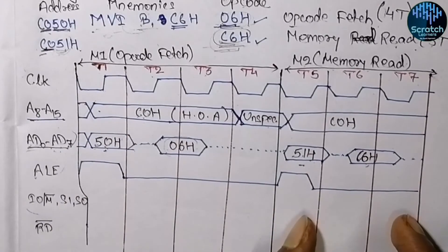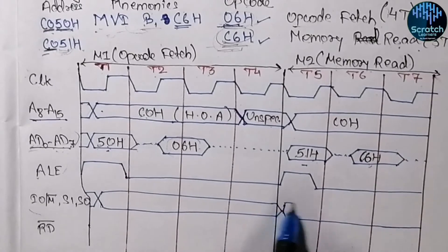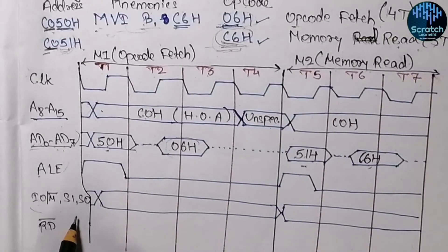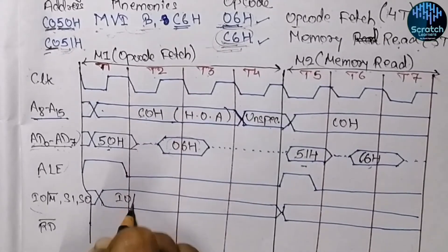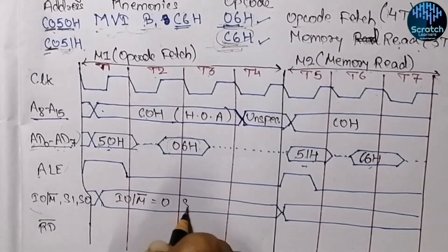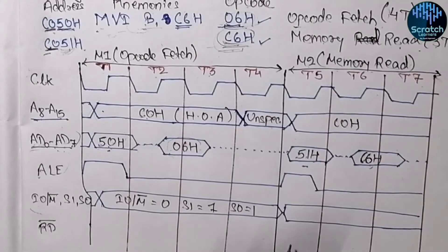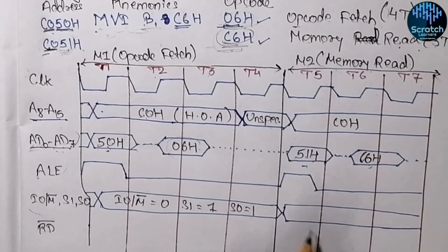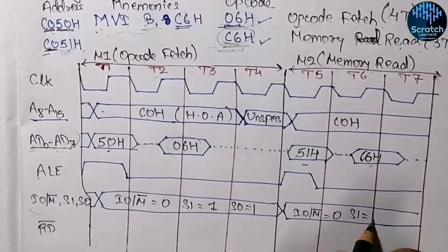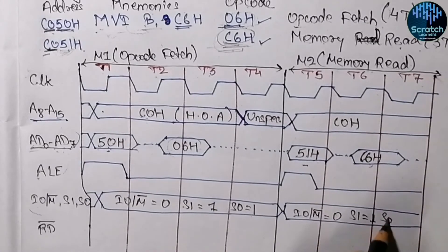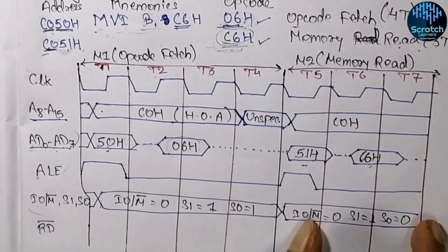The next signals are IO/M-bar, S1, and S0. There are specific values for both the opcode fetch and memory read cycles. Referring to the control signals chart: during the opcode fetch cycle, IO/M-bar equals 0, S1 equals 1, and S0 equals 1. During the memory read cycle, IO/M-bar is 0, S1 is 1, and S0 is 0. These are the corresponding values for each machine cycle.